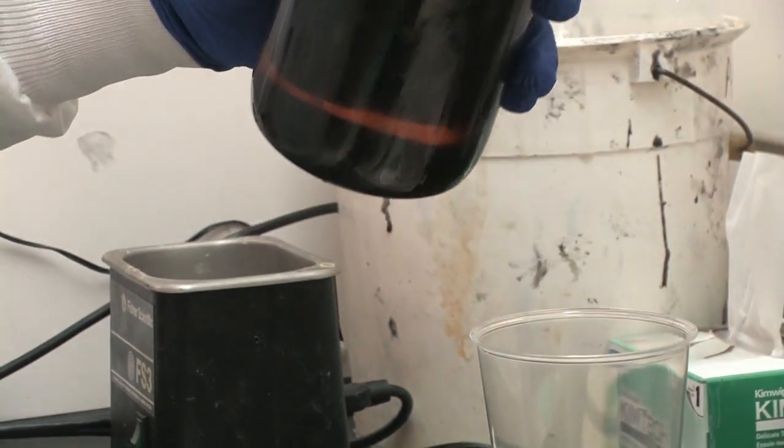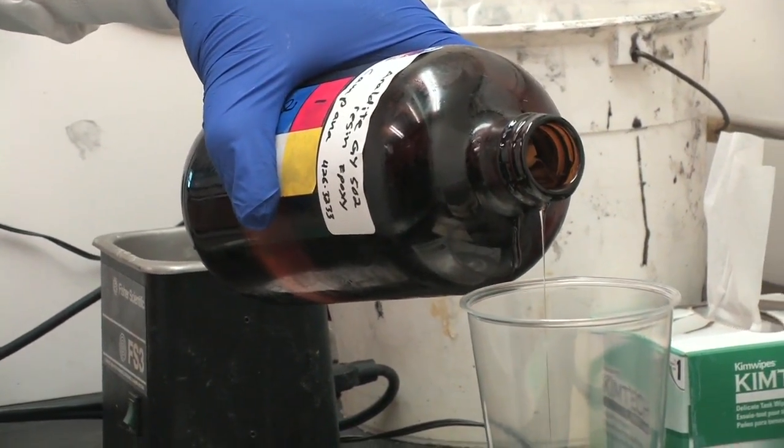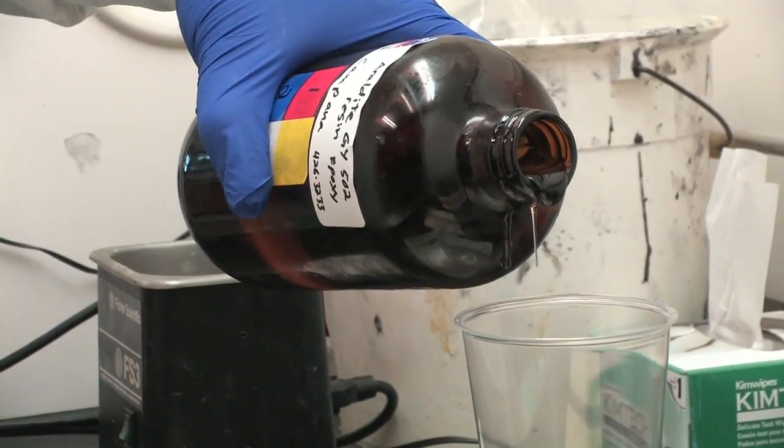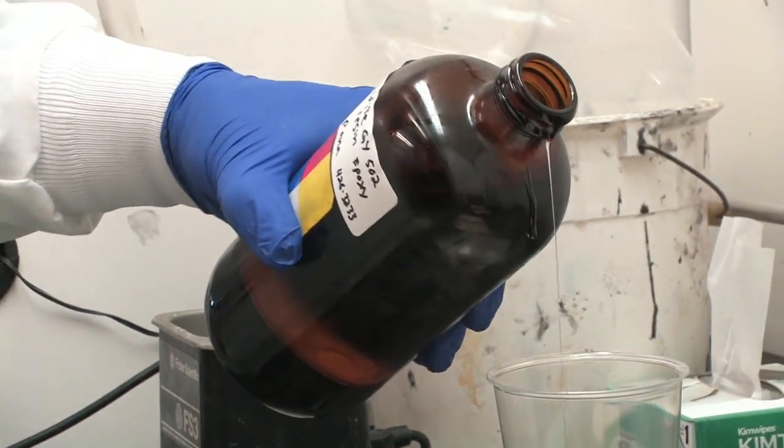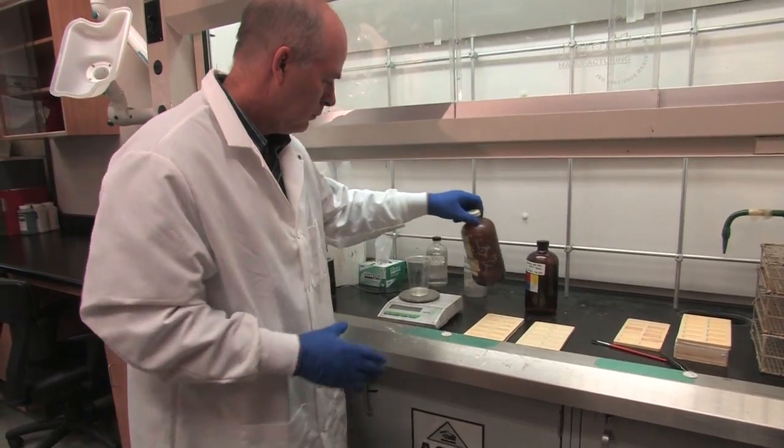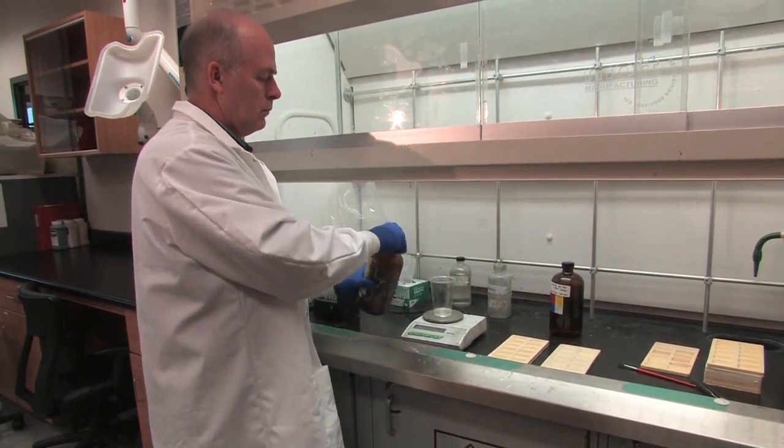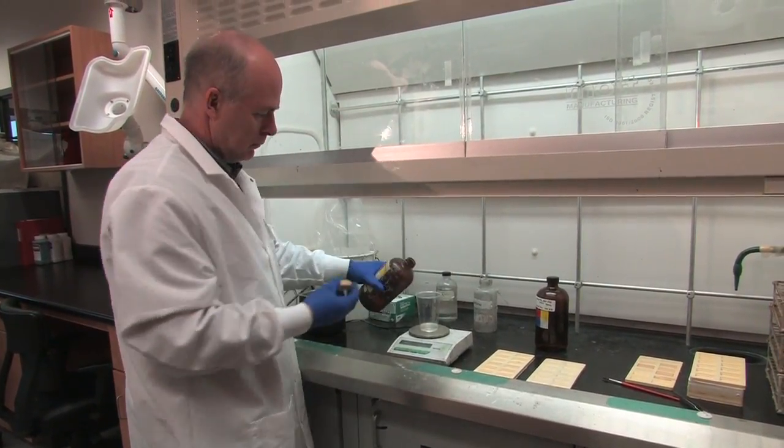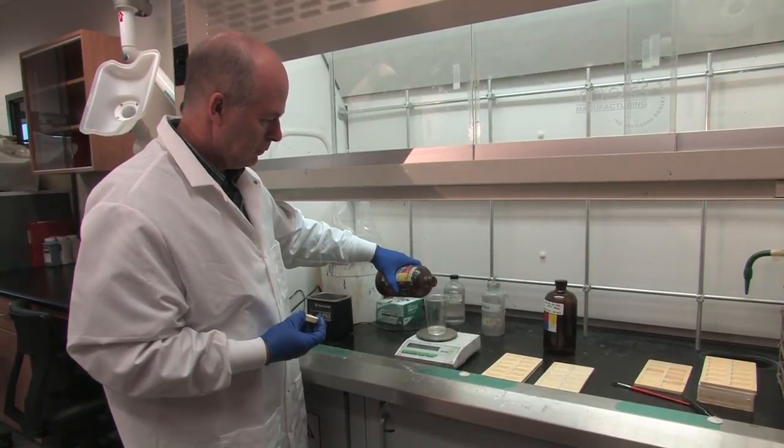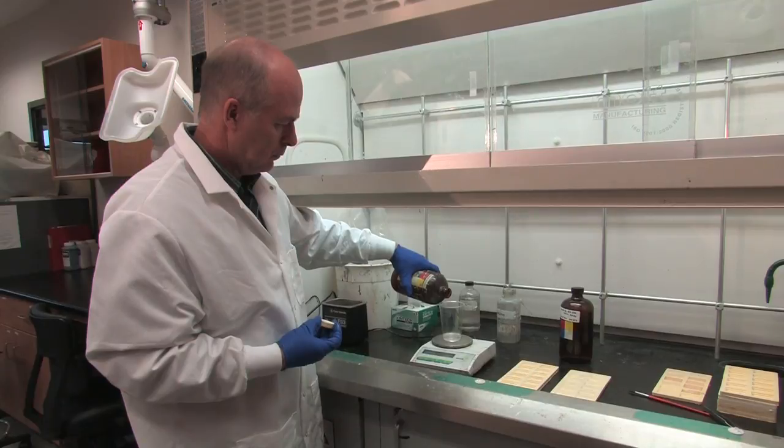Add the epoxy first, taking care when pouring it into the cup. If you happen to spill any epoxy or hardener, it can be cleaned up with the acetone located in the fume hood. Next, we add the hardener, so we tare the scale again and add the hardener carefully. Try to be as exact as you can with the measurements.